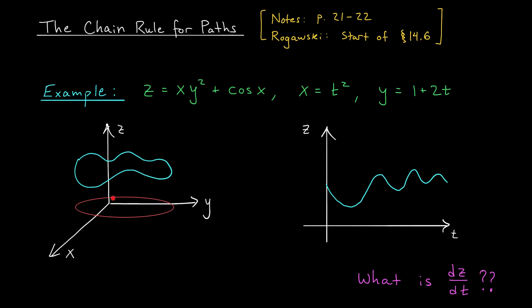As time passes and the bug walks around this ellipse, its coordinates x and y are changing. But z depends on x and y, right? So this z value is also changing. As the bug walks around the ellipse, the height of this function moves over time. So we can think of z as depending on x and y, but we could also think of z depending on t, right?